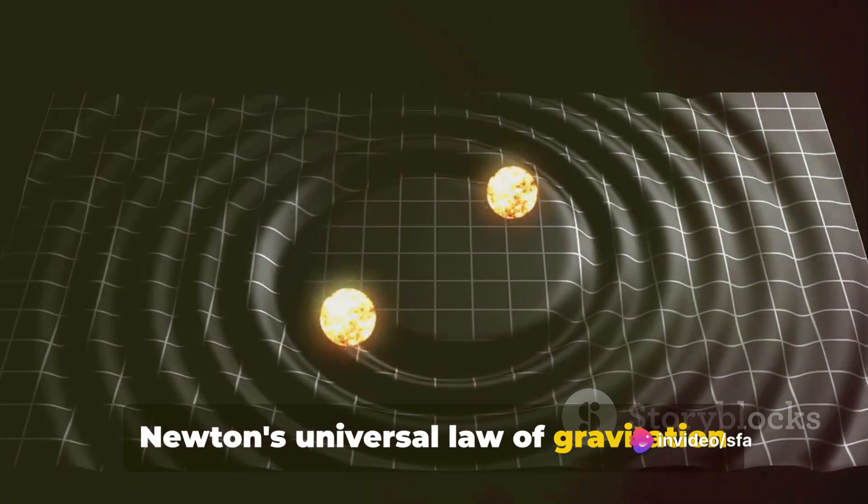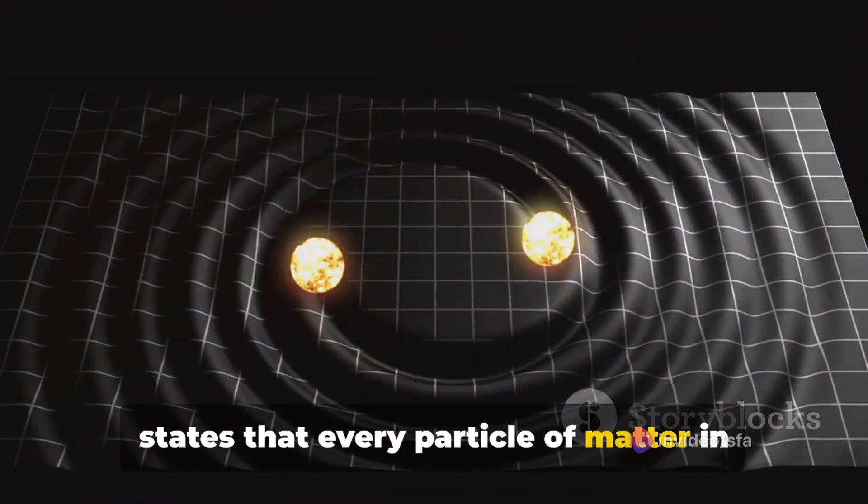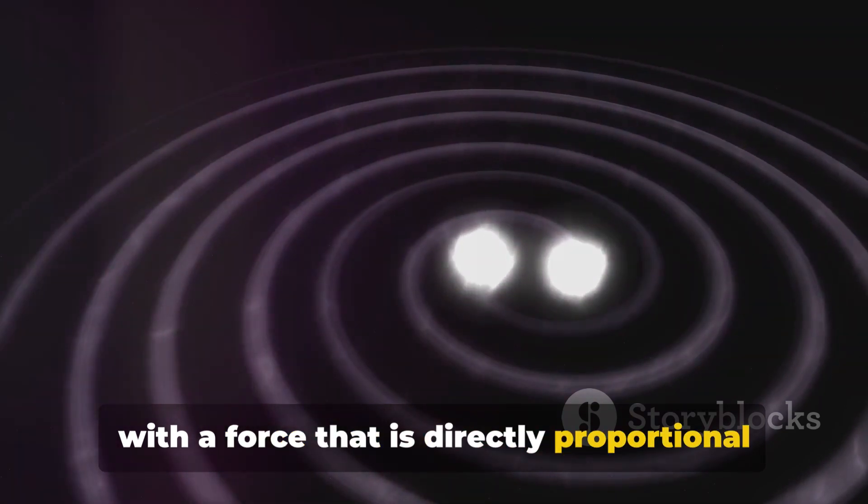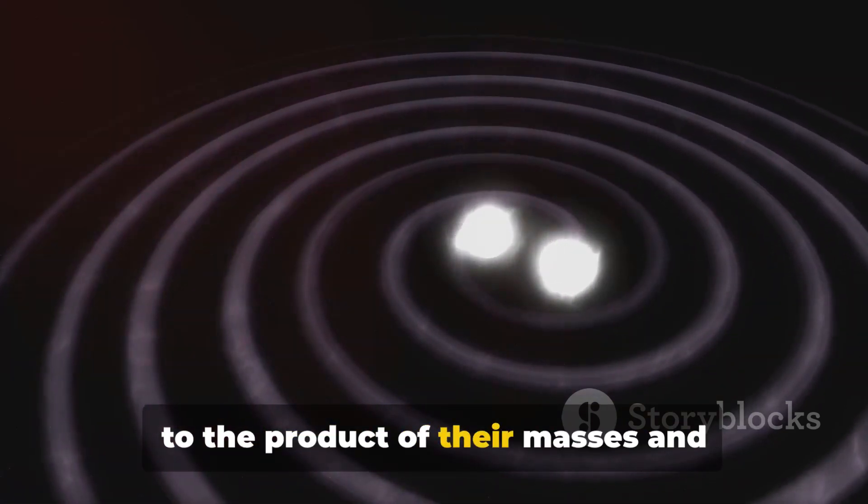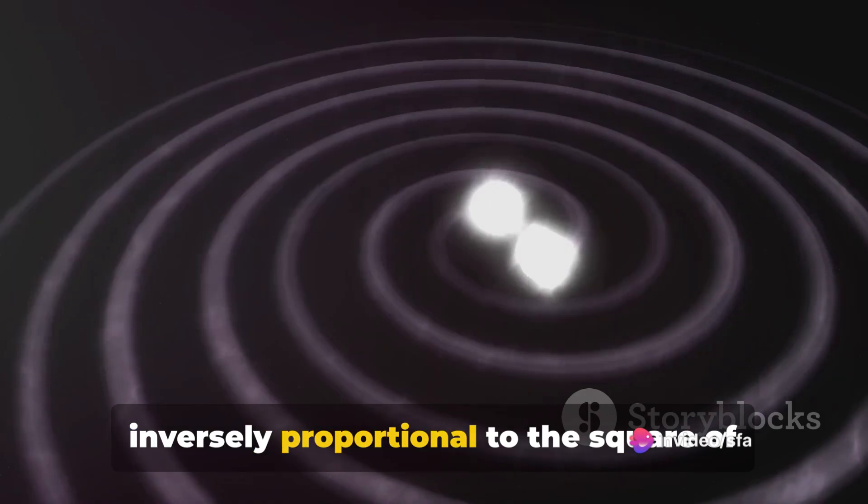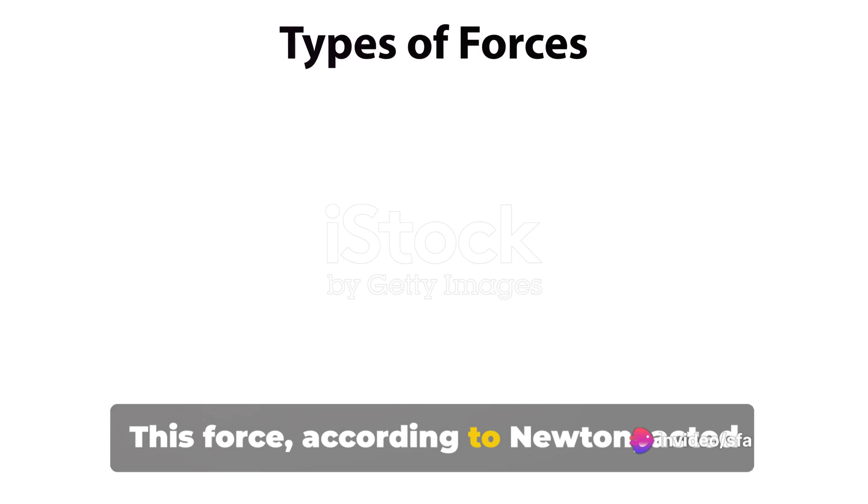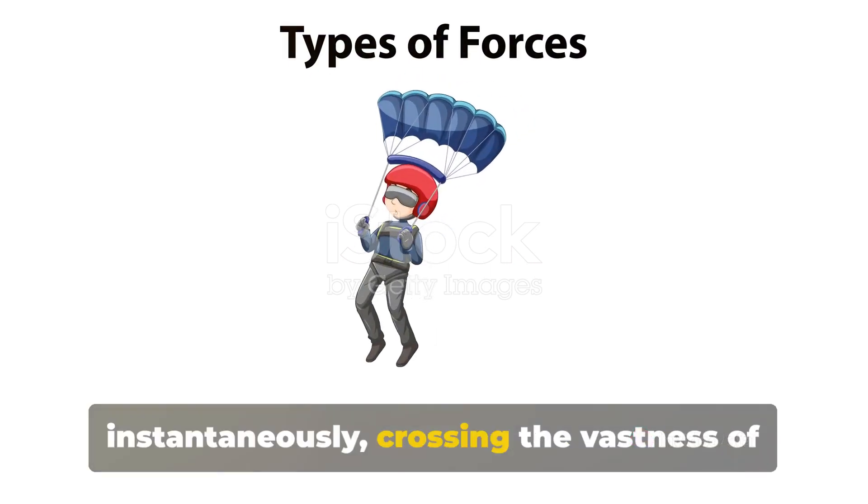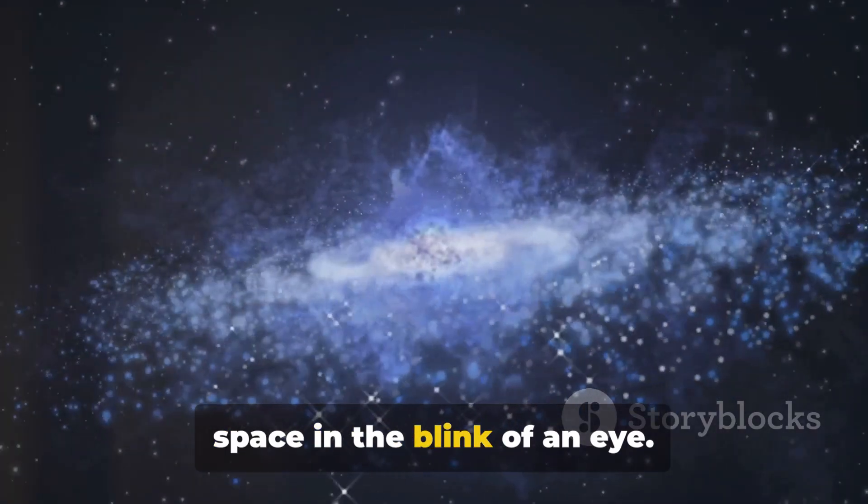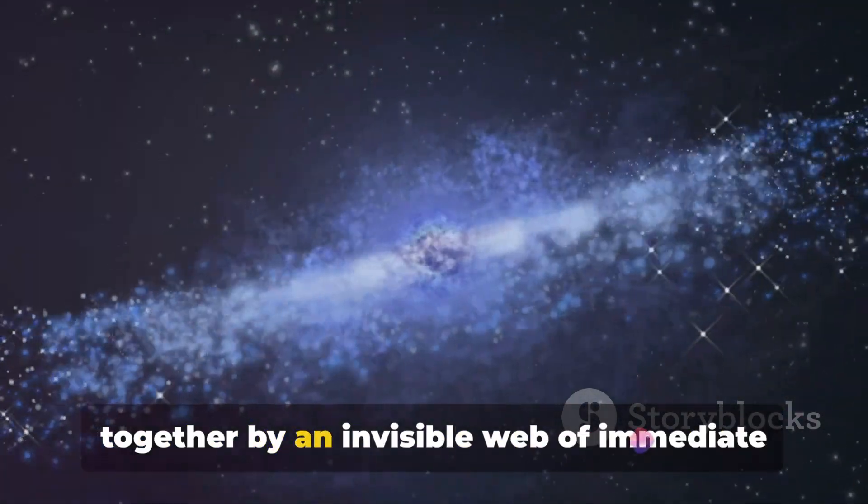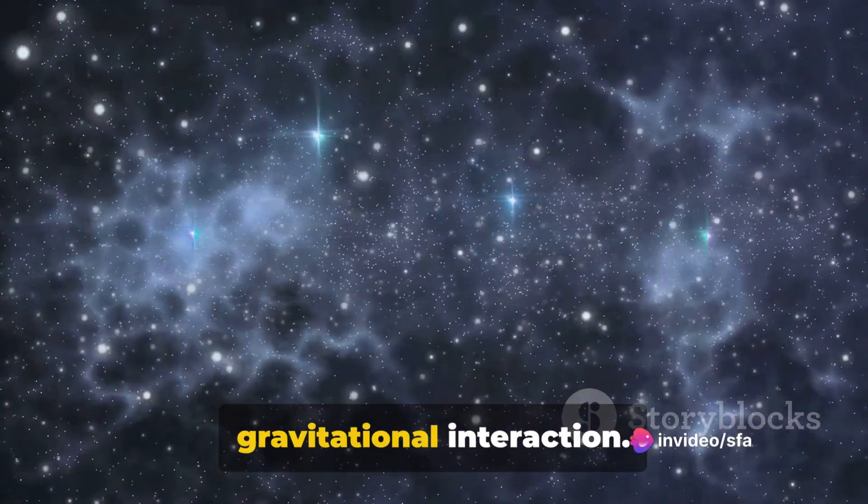Newton's universal law of gravitation states that every particle of matter in the universe attracts every other particle with a force that is directly proportional to the product of their masses and inversely proportional to the square of the distance between their centers. This force, according to Newton, acted instantaneously, crossing the vastness of space in the blink of an eye. It was as if the universe was woven together by an invisible web of immediate gravitational interaction.